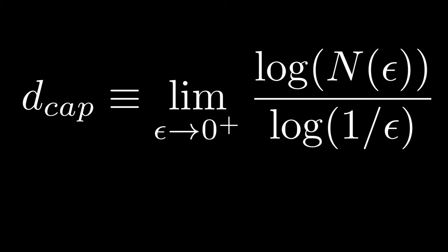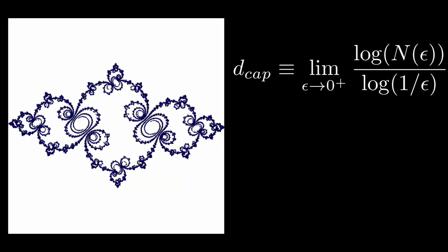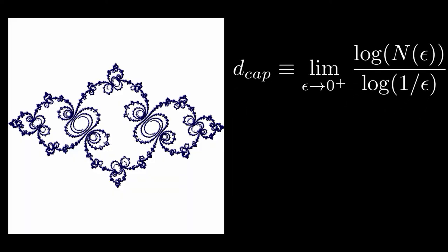However, if you calculate the capacity dimension of slightly more complicated objects, such as this one, the limiting term does end up playing a role. However, there's a nice numerical approximation we can do to get around this limit. To do this, we need to understand something called a power law, and this will introduce the concept of a scaling region.